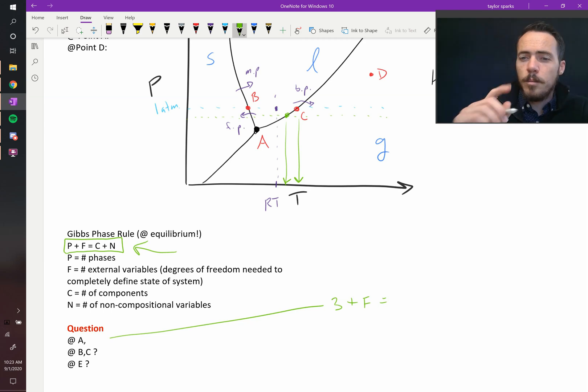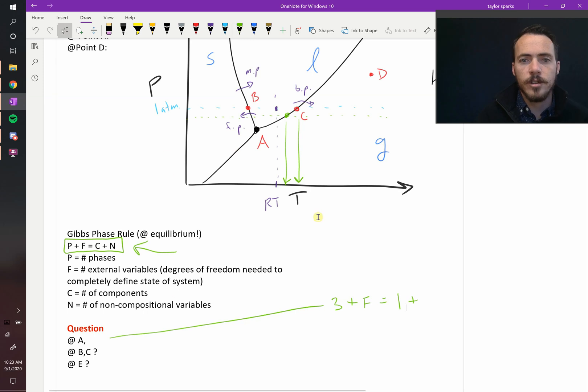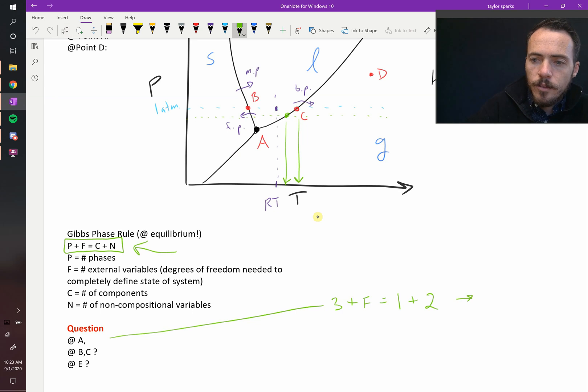We said that it's a single component system, so just one plus the number of non-compositional variables. That's pressure and temperature, so two. So just glancing at this equation, it's clear that the only value for F that solves this equation is F equals zero.